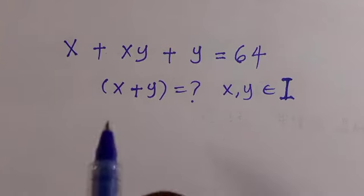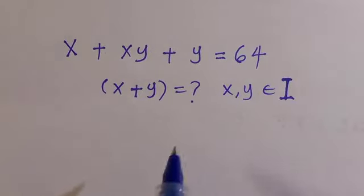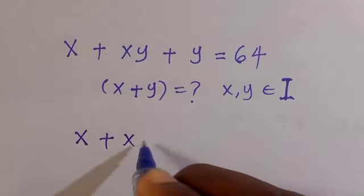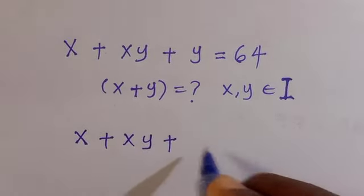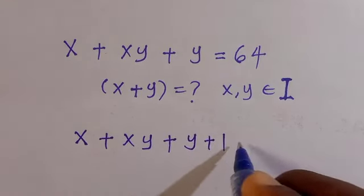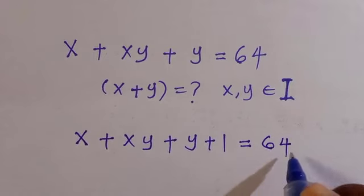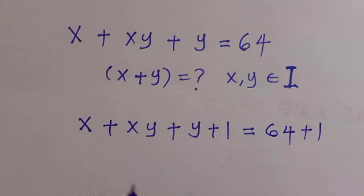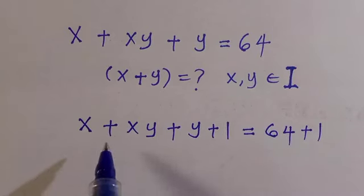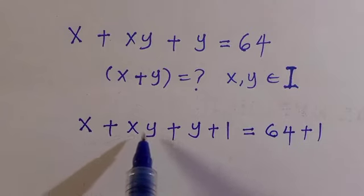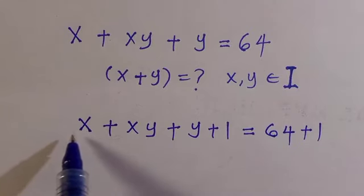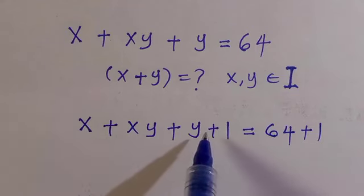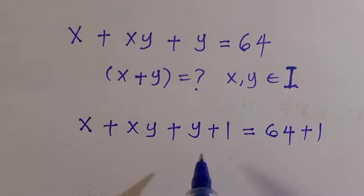To start with, we are going to add 1 to both sides, and we have x plus xy plus y plus 1 equals 64 plus 1. The reason I did this is: we have x plus xy here — if I factor out x, we are left with 1 plus y, so this is also y plus 1, and these are commutative.